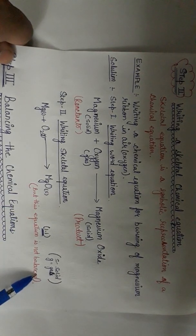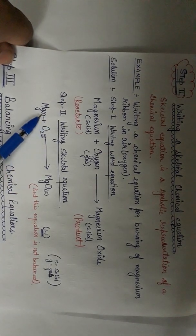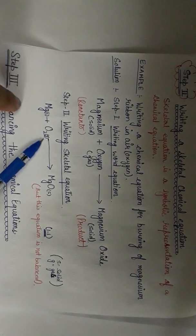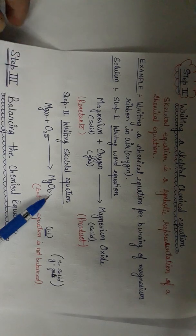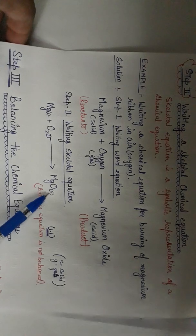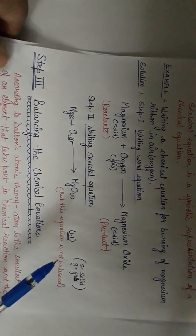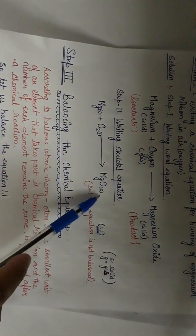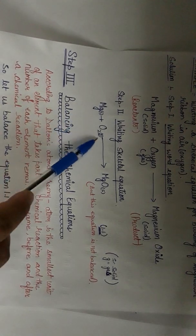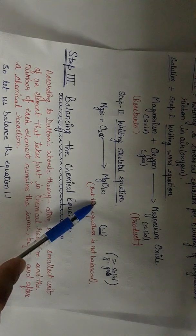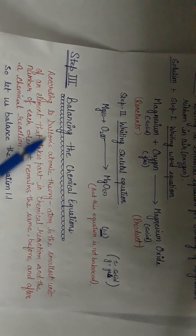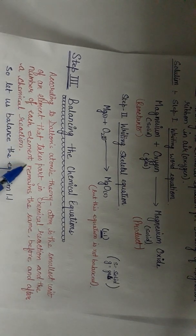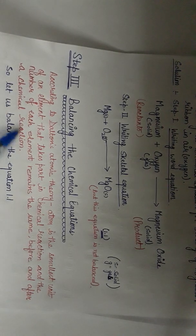But it is not balanced. The 'S' notation indicates the physical state of the element — magnesium is in solid state, oxygen is in gaseous state, and magnesium oxide is also in solid state. These are the representations of the physical state of the reactants and products; it is a must to represent the physical state while writing the reaction. As we know, a balanced equation means the atoms present on the reactant side should be equal to the atoms present on the product side. According to Dalton's atomic theory, the atom is the smallest unit of an element that takes part in a chemical reaction, and the number of each element remains the same before and after a chemical reaction.